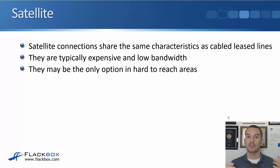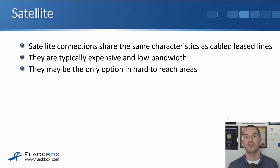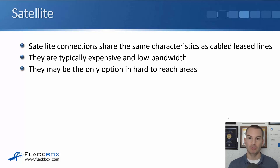Satellite connections share the same characteristics as cabled leased lines, which is why they're mentioned in this lecture. They're typically expensive and lower bandwidth. The reason you'd use a satellite connection is often because it's the only option in a hard-to-reach area — for example, in mining or oil and gas, if you want a WAN connection on an oil rig, satellite is normally your only option.